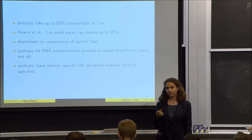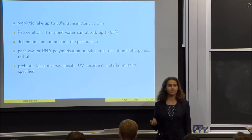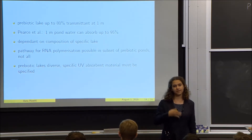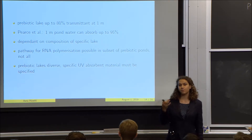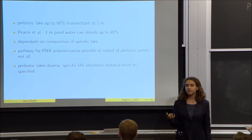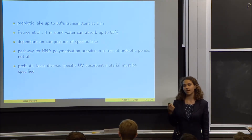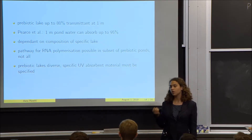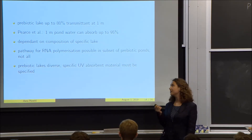If a pathway is going to depend on high UV absorbance, then a specific ion that would absorb UV light must be invoked, and this will have its own prebiotic and biological consequences for that pathway.